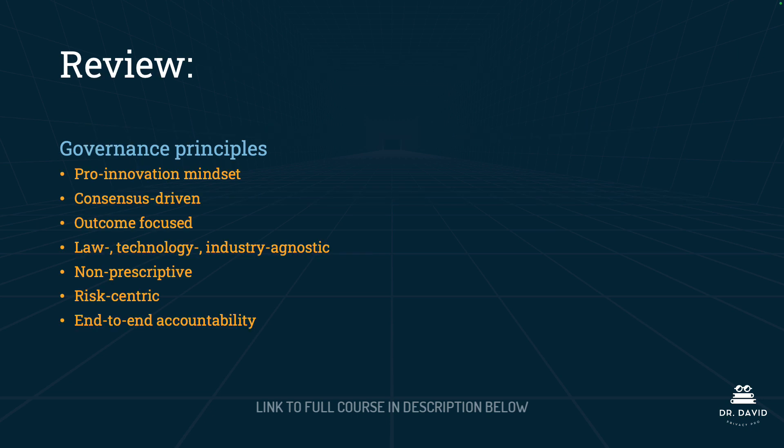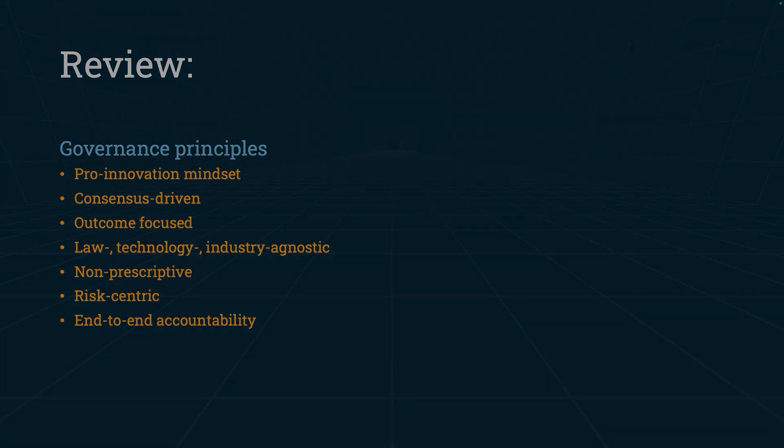In this lecture, we have gone over seven different governance principles. They include having a pro-innovation mindset, being consensus-driven, being outcome-focused, having a law, technology, and industry agnostic approach, being non-prescriptive, risk-centric, and ensuring end-to-end accountability. Again, you're going to need to understand the meaning of each of these for the exam. We'll see you next time.